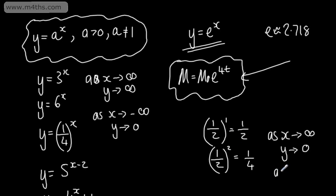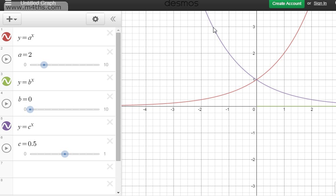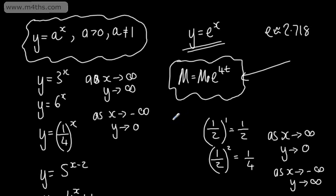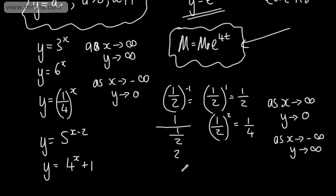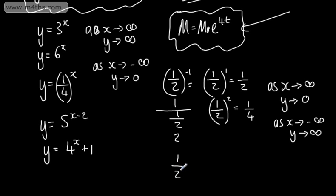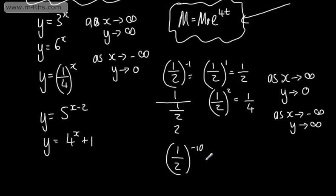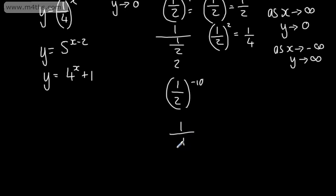For y = (1/2)^x, as x tends to negative infinity, y will tend to positive infinity. If we put in very large negative numbers, it's going to get huge. For instance, (1/2)^(−1) = 1/(1/2) = 2. And (1/2)^(−10) = 1/(1/2^10) = 2^10 = 1,024. That gets very big very quickly.